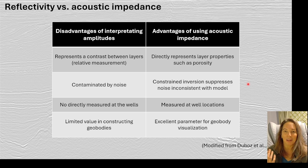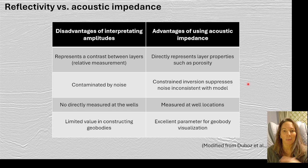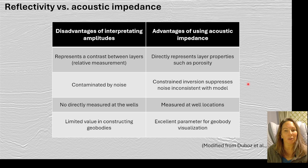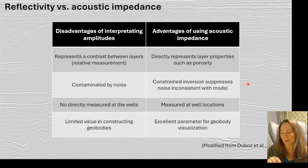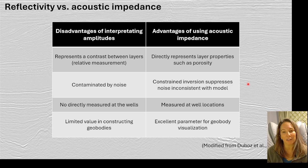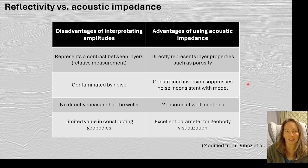Looking at the difference between amplitude interpretation and acoustic impedance: on the amplitude side we're looking at layer contrast, which can be tricky. We often have noisy data, and we may be able to tie it to our wells in terms of interfaces. But with acoustic impedance we're getting actual layer properties that make more sense — like looking at an outcrop where instead of just seeing the interface between limestone and sandstone, we're seeing the limestone itself. We can compare it more directly to well data, and because we're removing wavelet effects, it handles noise better and is overall better for visualizing and interpreting geologic bodies in software packages.